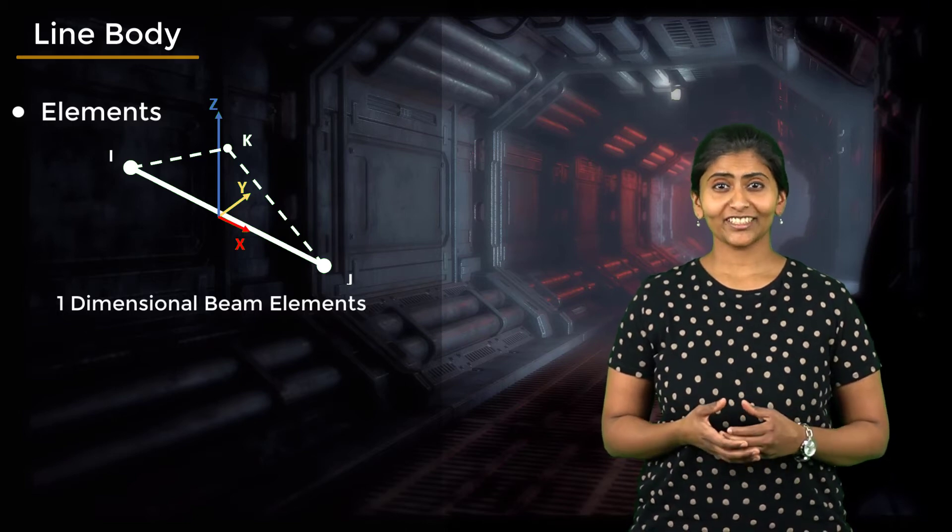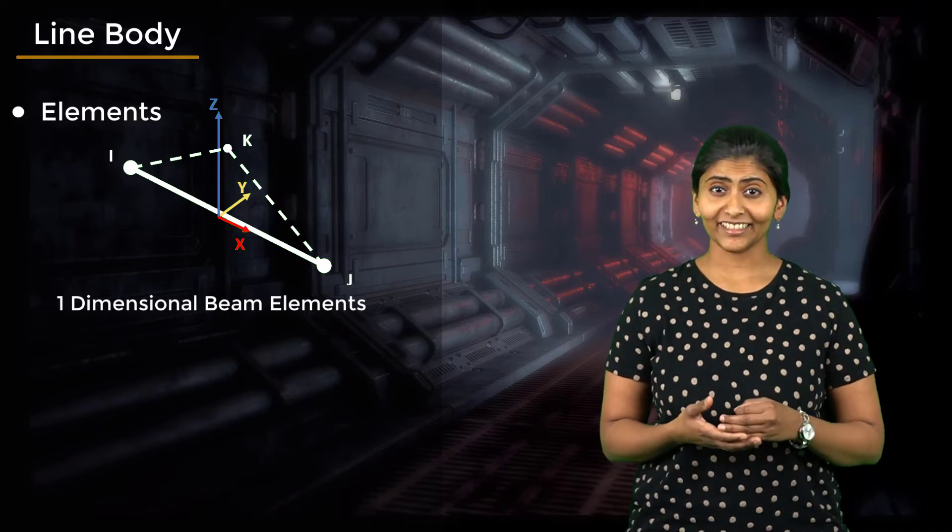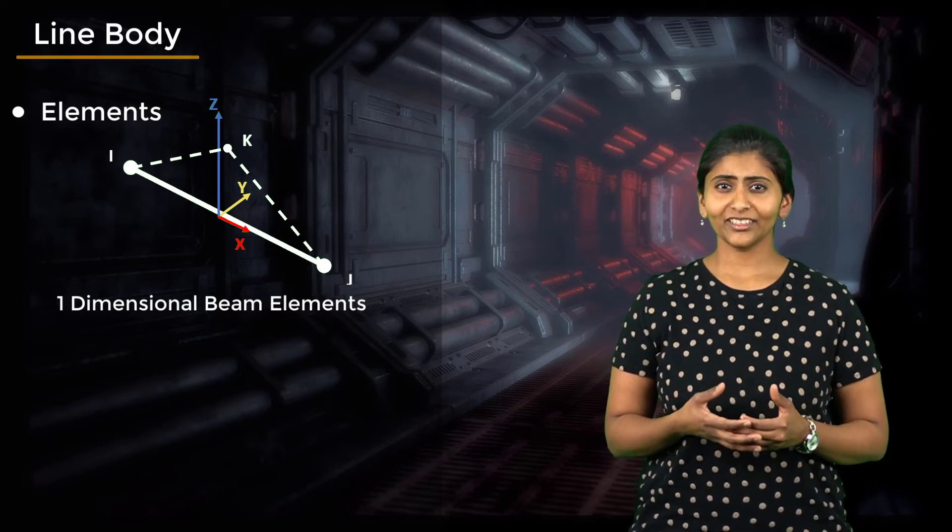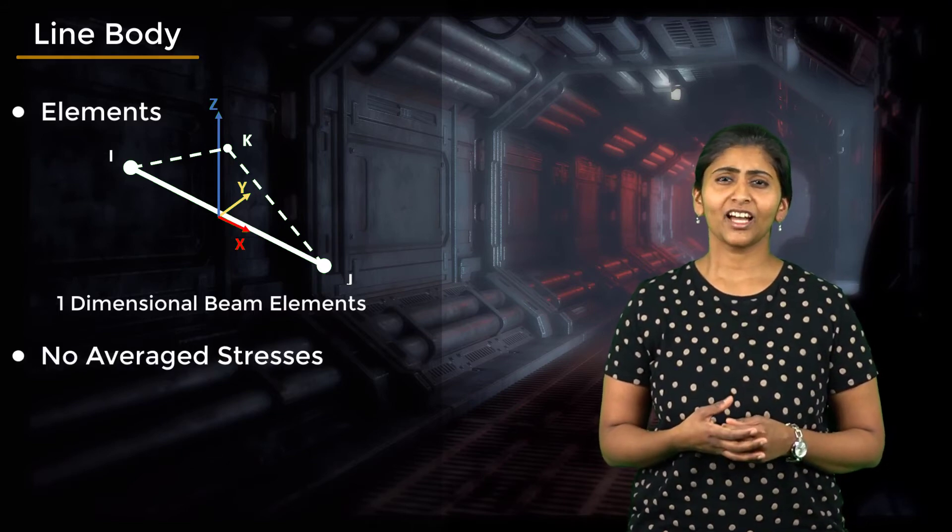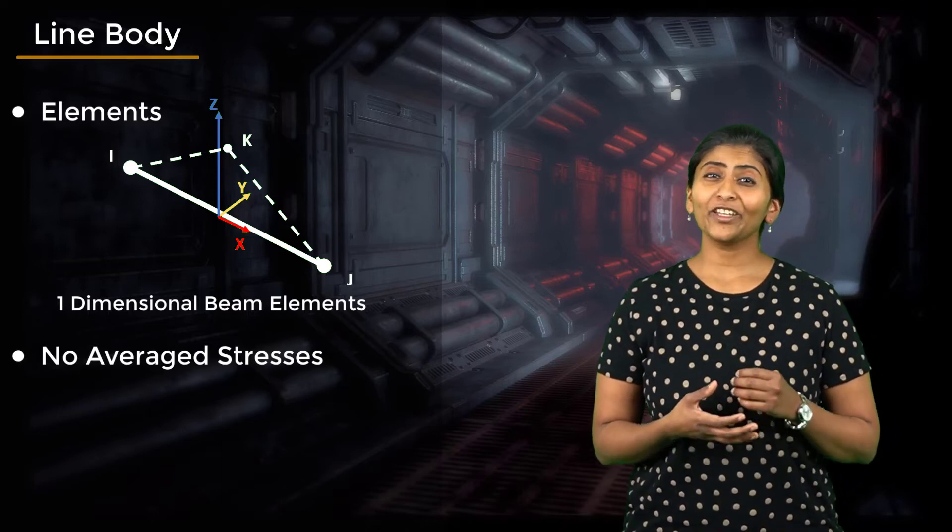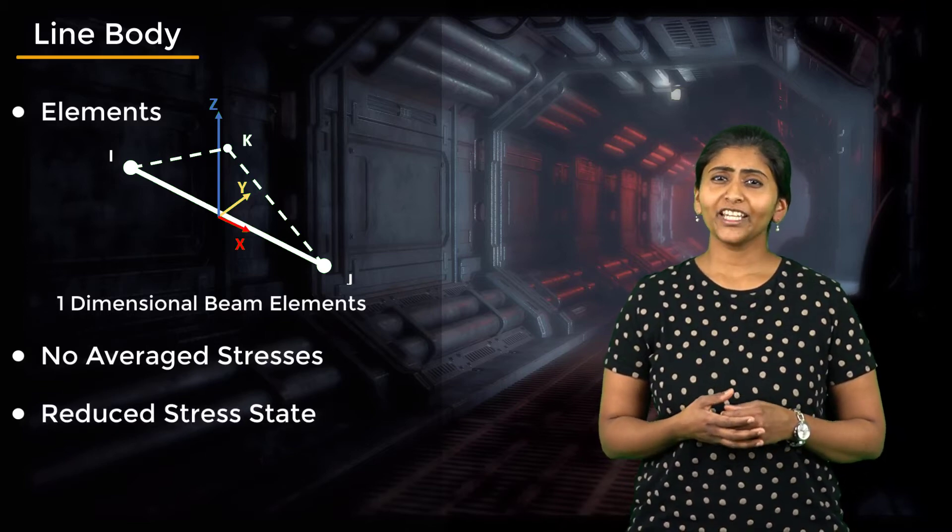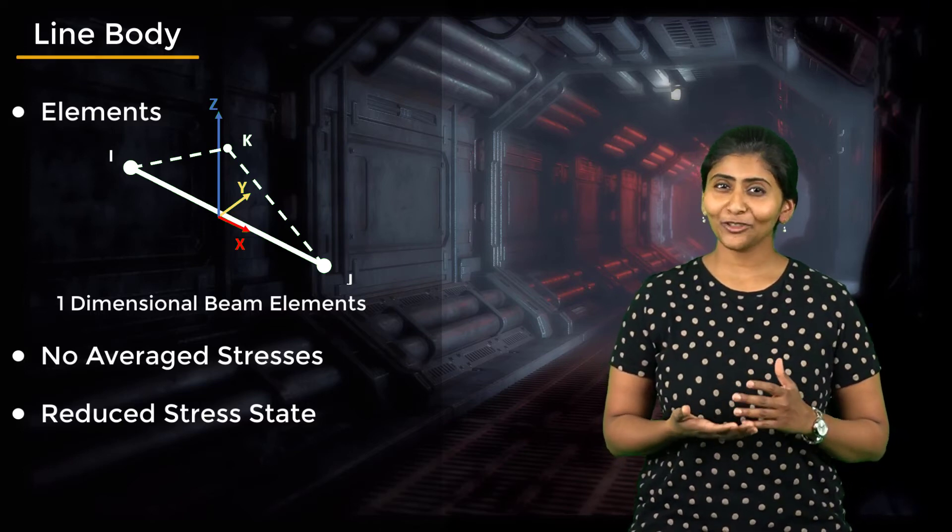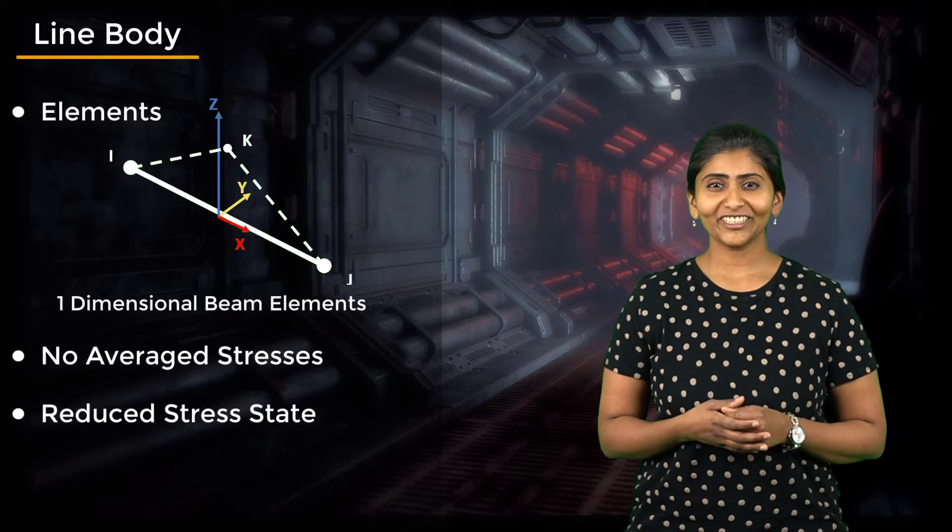The bolt cross-section has four integration points where stresses are calculated. These stresses are then extrapolated to the nodes. But unlike solid elements, beam elements cannot calculate the average stresses at nodes. One shortcoming of using line bodies to represent bolts is that we have a reduced state of stress. That is, we can obtain only three stress components instead of six. While this is usually not an issue since a bolt is not compressed along the shaft, it is a point worth keeping in mind.